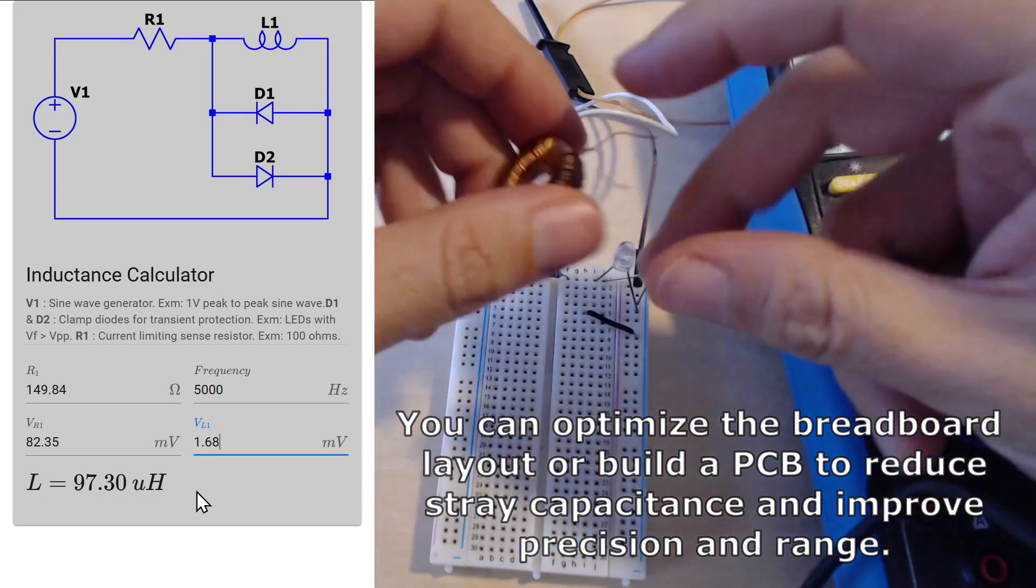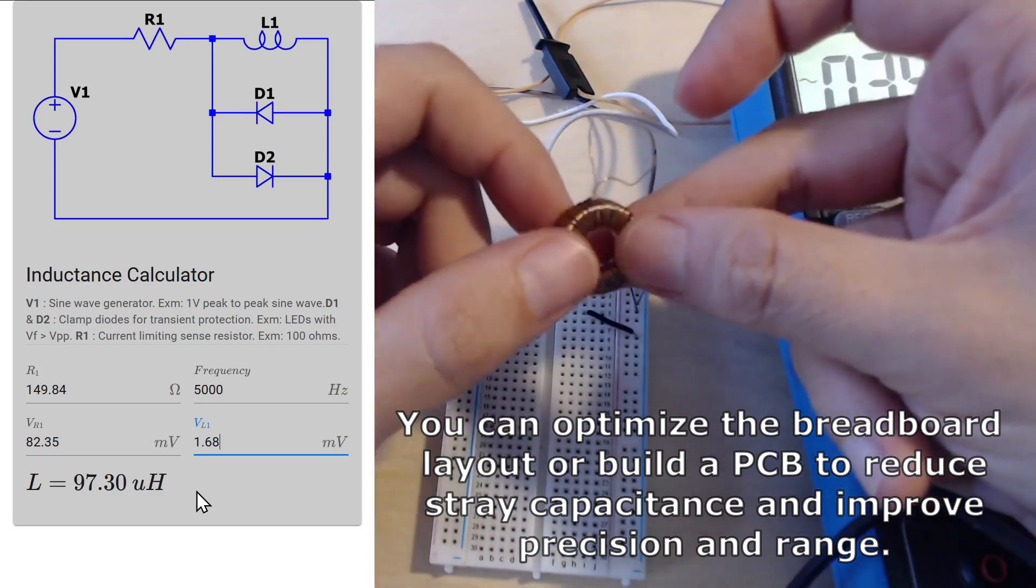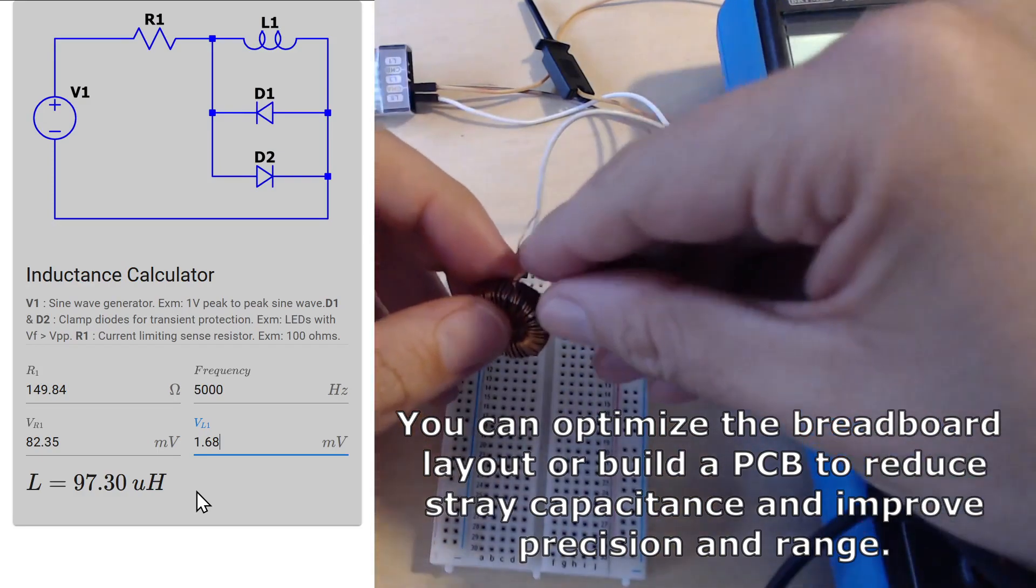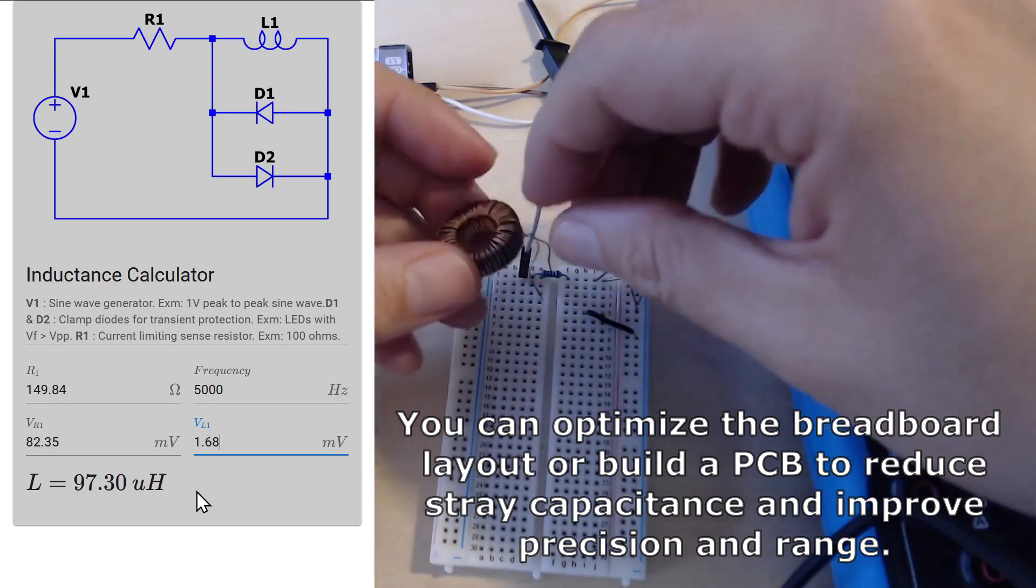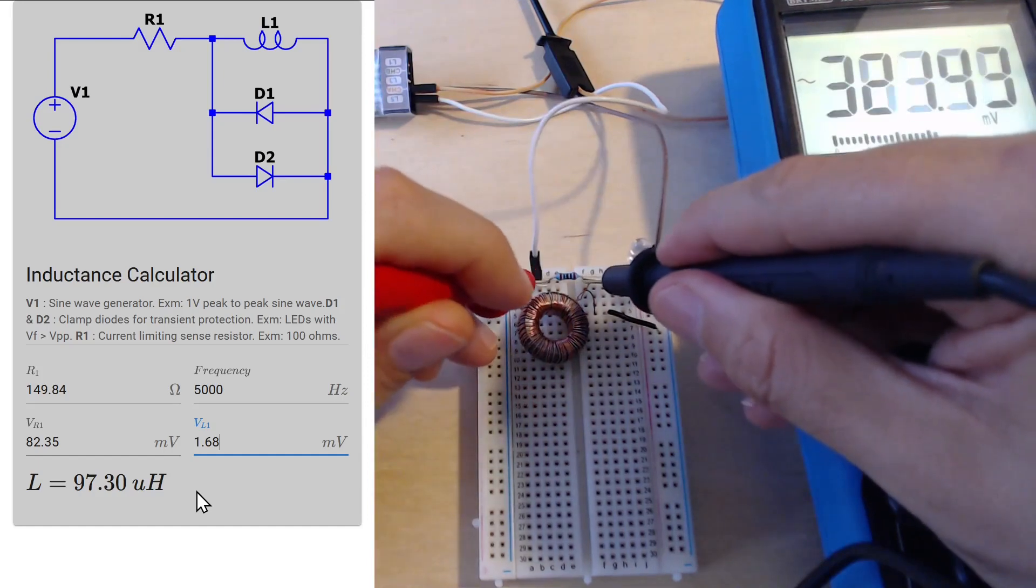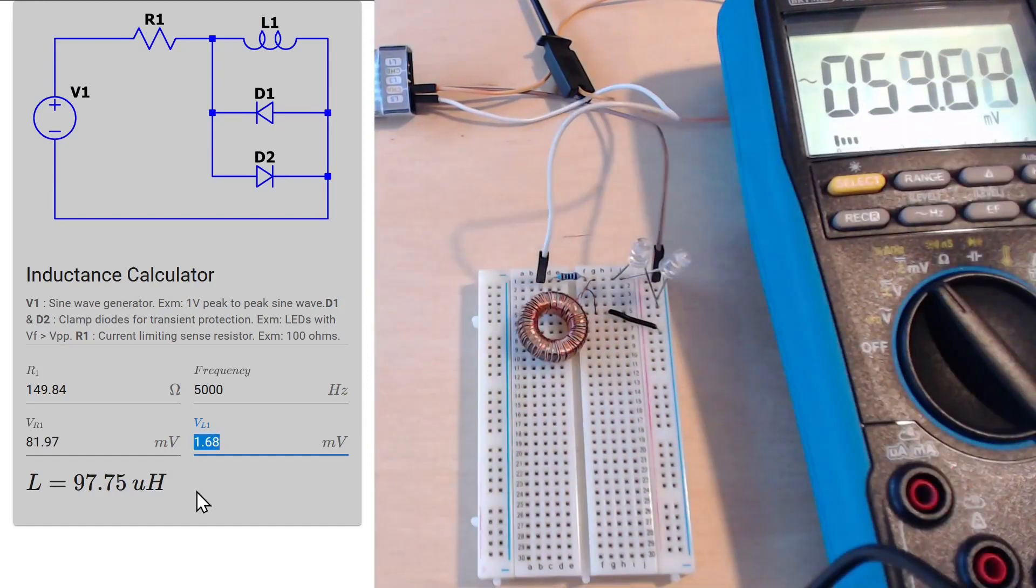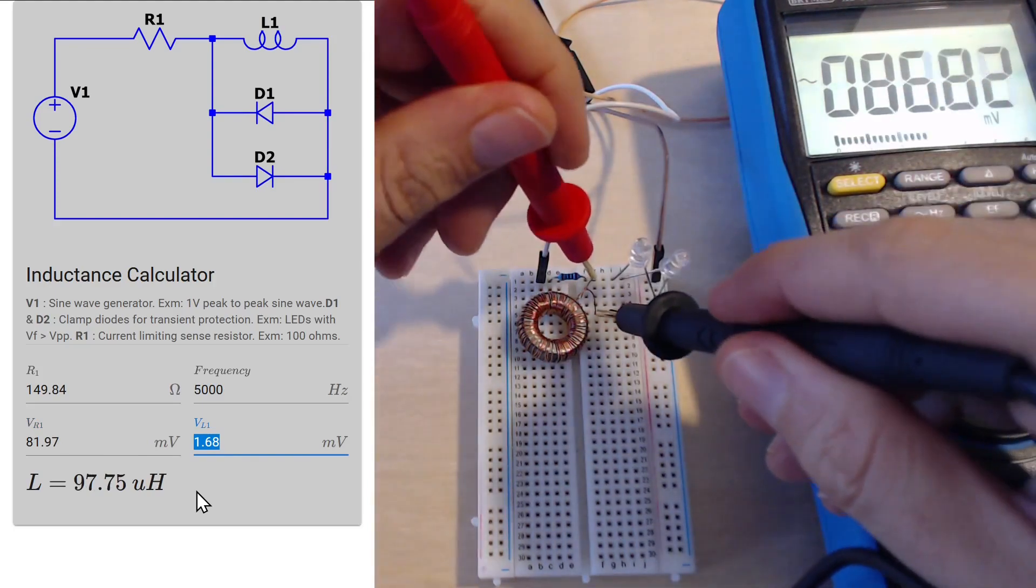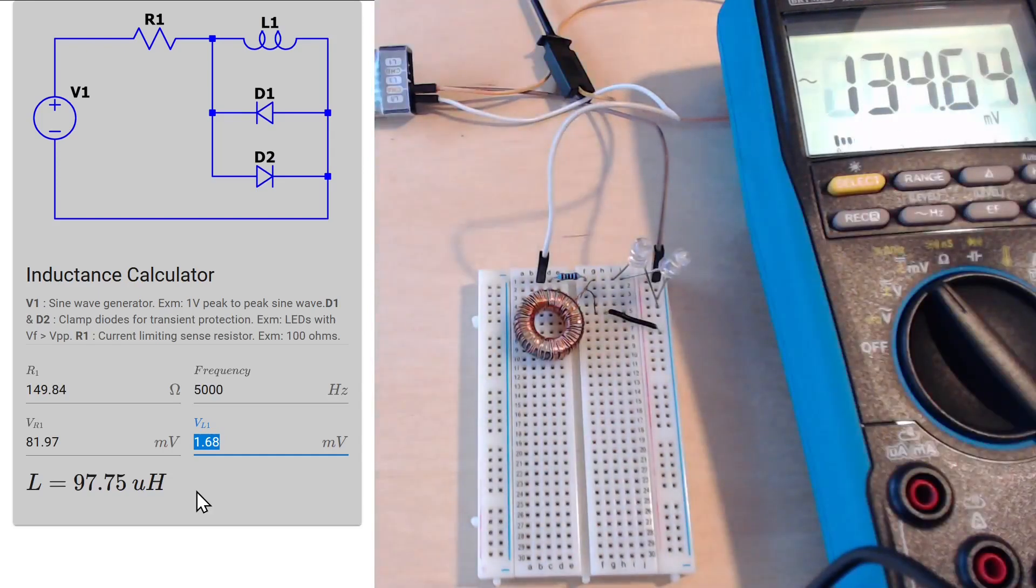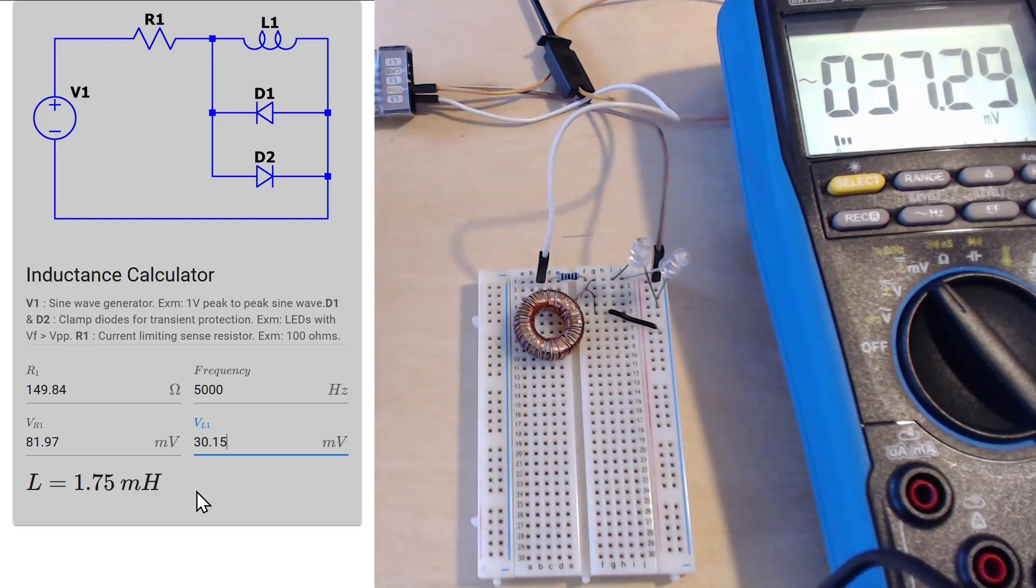Now let's try something else - we are still at 5 kilohertz. And let's measure a different inductor this time, which is a hand-wound beast that I did maybe years ago. Let's give this one a try. It's a little bit tricky to pop it onto the breadboard. Now let's measure the voltage across the resistor first - 81.97. And the voltage across our inductor - 30.15. Yeah, so this is - I knew this was 1.8 millihenries, measured as 1.75 millihenries - that's pretty good. That's a big one and we are measuring it properly.